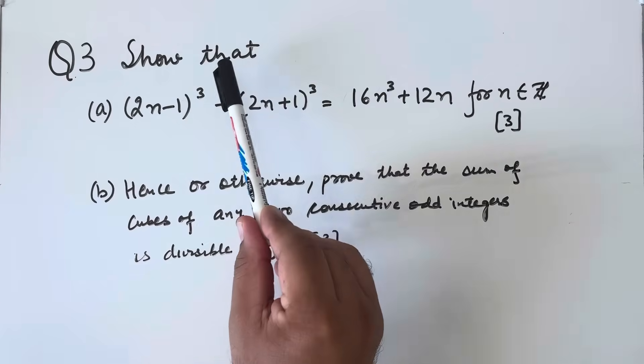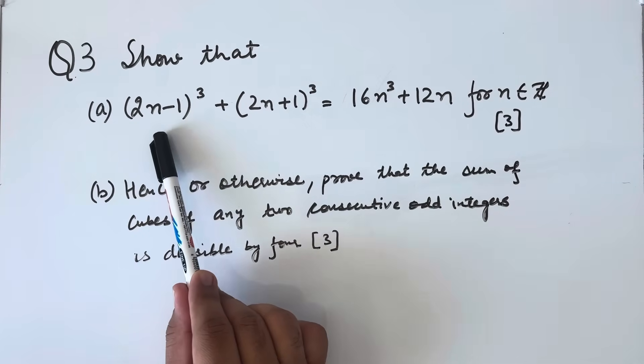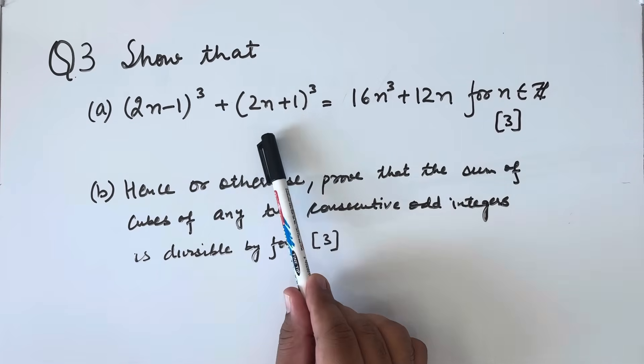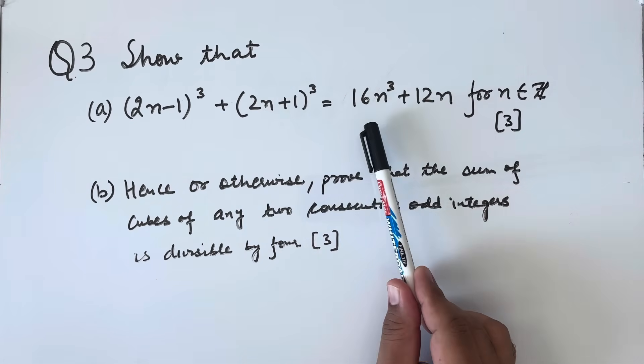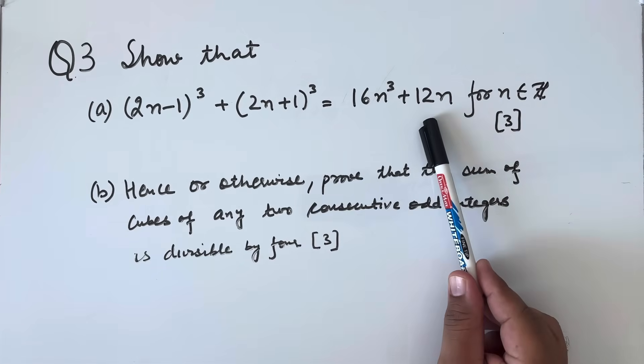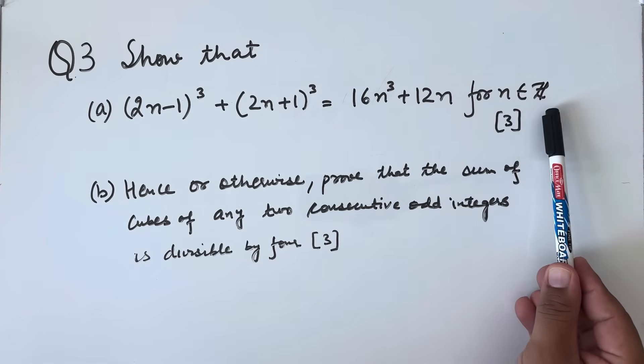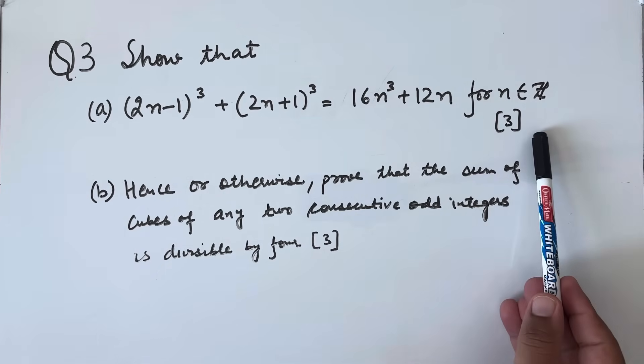Question number 3, show that (2n-1)³ + (2n+1)³ is equal to 16n³ + 12n for n belongs to integer. This is of 3 marks.